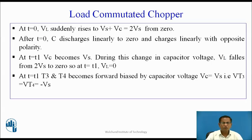After t=0, C discharges linearly to 0 and charges linearly with opposite polarity. At t=T1, Vc becomes Vs. During this change in capacitor voltage, Vl falls from 2Vs to 0 at t=T1. At t=T1, T3 and T4 become forward biased by the capacitor voltage Vc=Vs, that is Vt3 = Vt4 = -Vs.